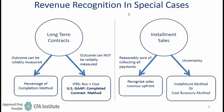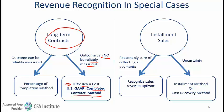Under revenue recognition in special cases, here is a subtle difference. When dealing with long-term contracts where the outcome cannot be reliably measured, IFRS says that revenue equals cost, so you can only recognize revenue to the extent of the cost incurred. US GAAP takes a more conservative approach and says that you can start recognizing revenue only after the project has been completed.